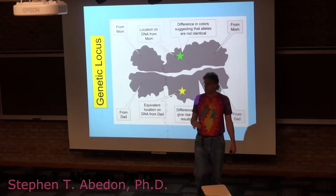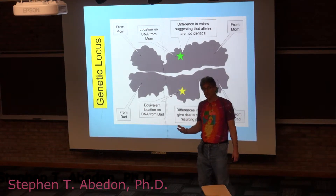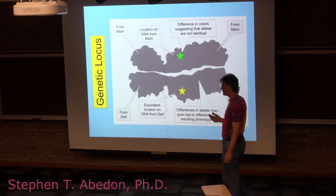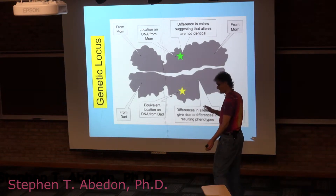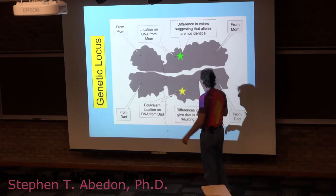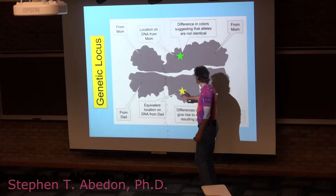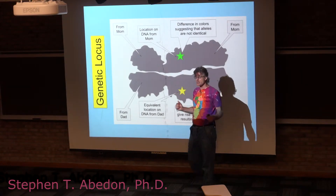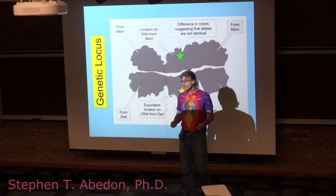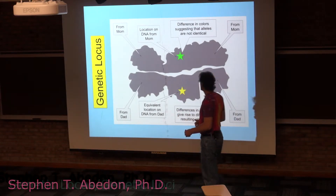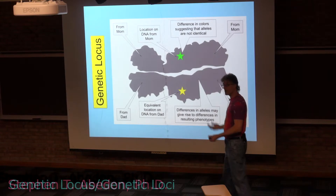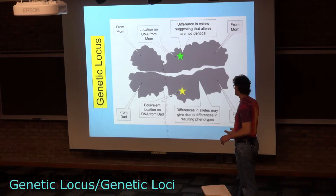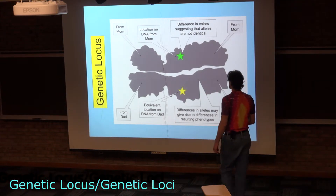Each of them are going to have these positions, unless there's been some deletion in the chromosome, which is a problem. And they're going to have genes that are located at the same positions, and each of them can have variations in those genes or not, each of these chromosomes.